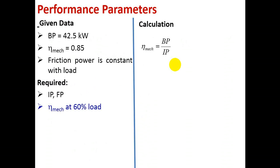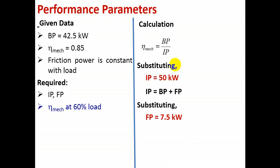Mechanical efficiency equals BP divided by IP. Substituting, you will get IP equal to 50 kilowatt. Using the formula IP equals BP plus FP, substitute for IP and BP, and you will get FP equal to 7.5 kilowatt.